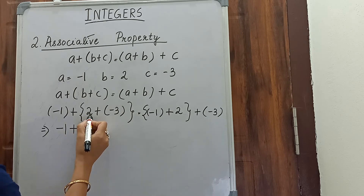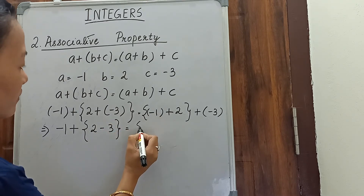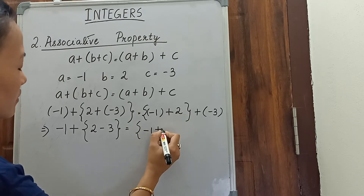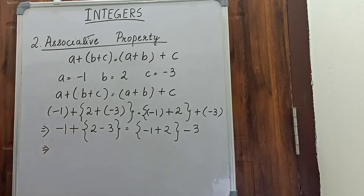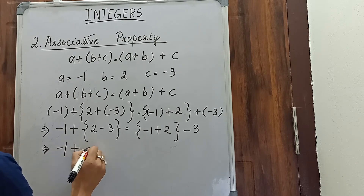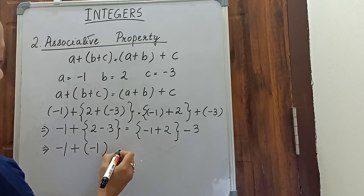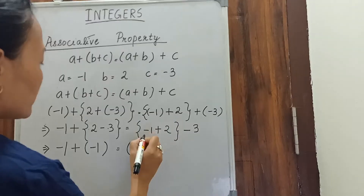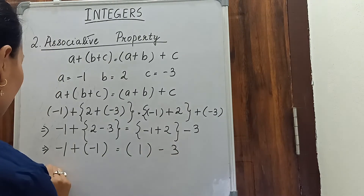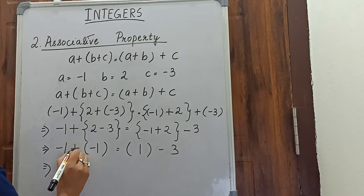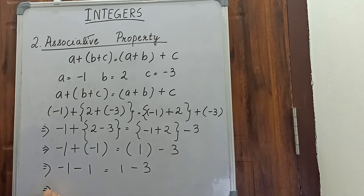On the left, we solve the first bracket: 2 plus minus 3 — plus and minus is minus, so 2 minus 3. On the right, we solve minus 1 plus 2 first: plus and minus is minus, so we get minus 3. Now on the left: minus 1 plus (minus 1), and on the right: plus 1 plus minus 3. Continuing: 3 minus 2 is 1, bigger number is 2, sign is minus. On the right: 2 minus 1 is 1, bigger number is 2, sign is plus, giving plus 1, then plus 1 plus minus 3.